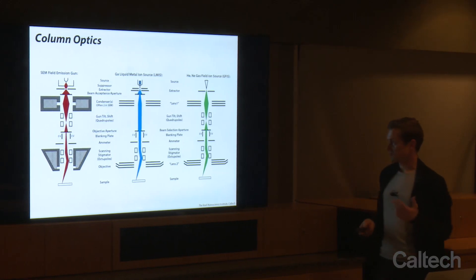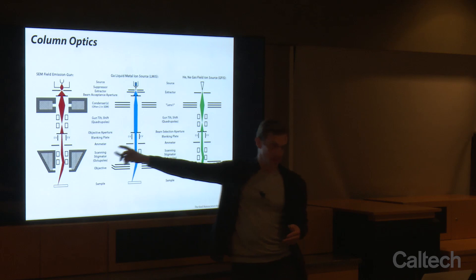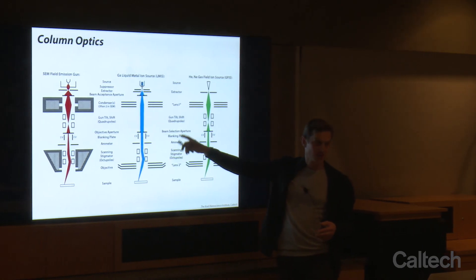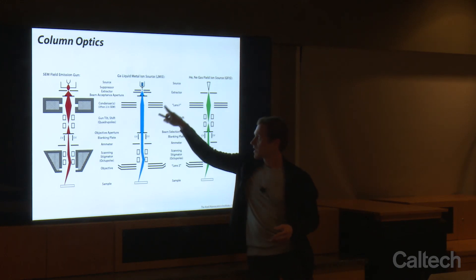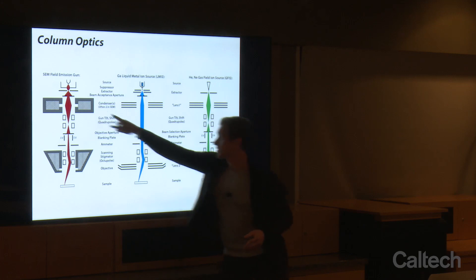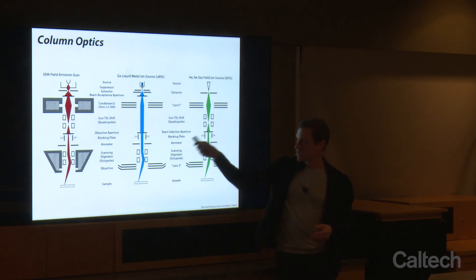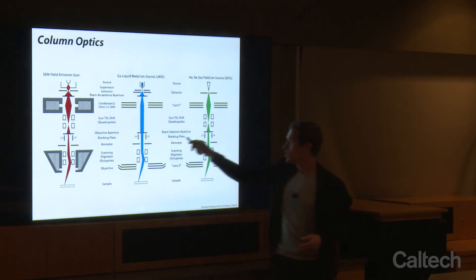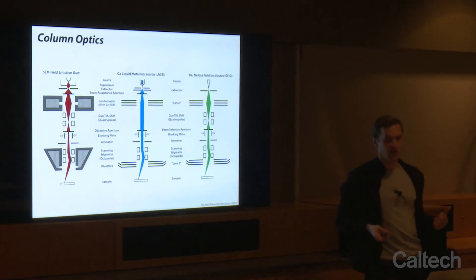The column optics are also fairly similar. We talked about electromagnetic lenses with SEM last week. Today we'll talk about electrostatic lenses used with the gallium-focused ion beam. Electrostatic lenses are shown with this shape, and these are electromagnetic lenses. Here is the helium-neon column for next week — they're quite similar. The only thing that's really different today is that in the gallium-focused ion beam, we don't have quadrupoles in the column as steering optics.